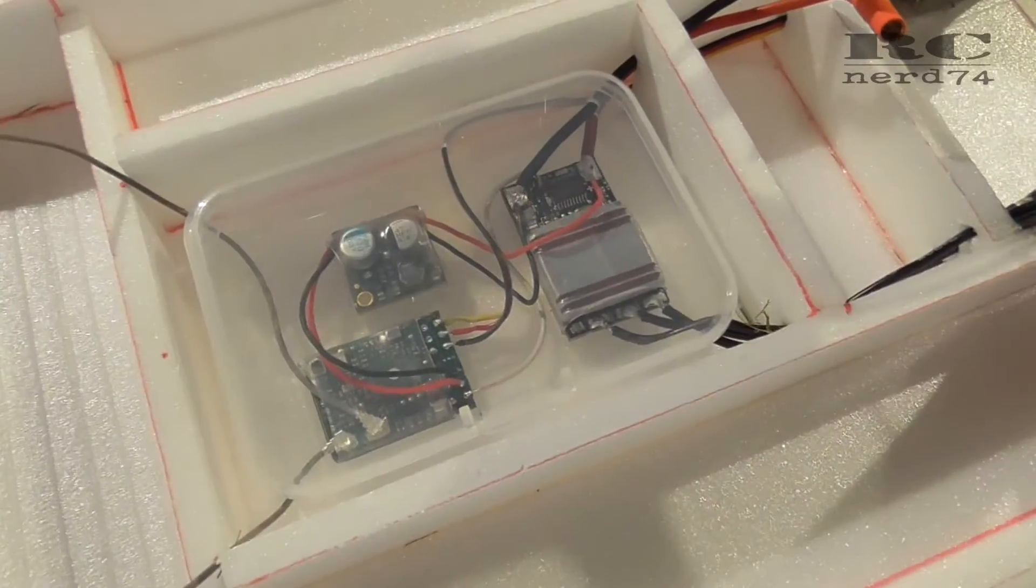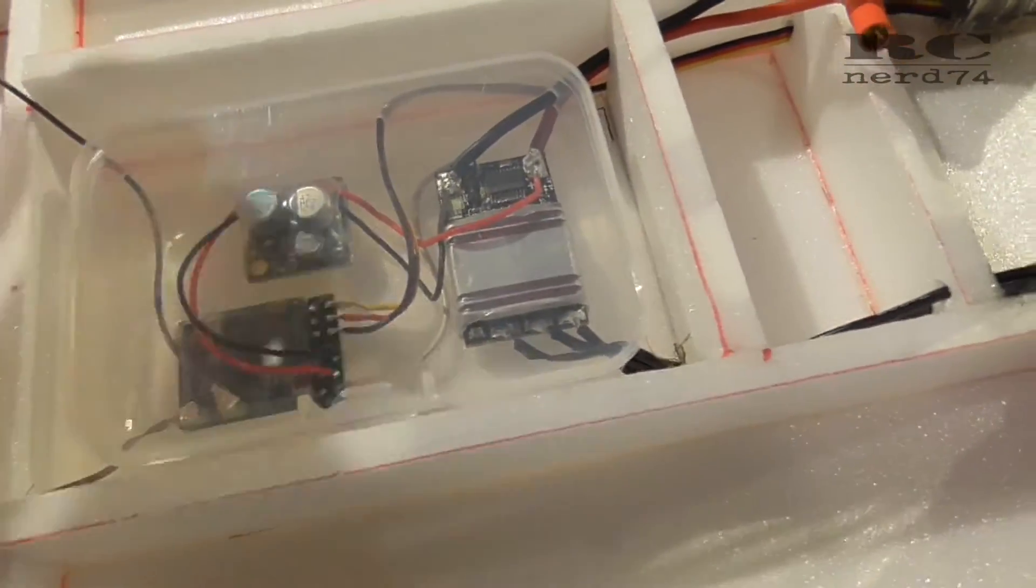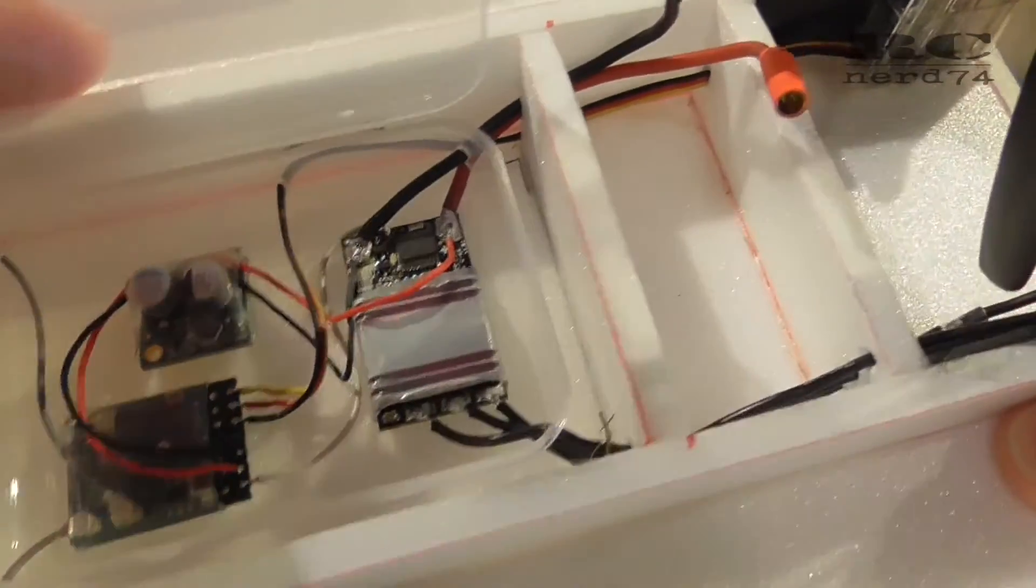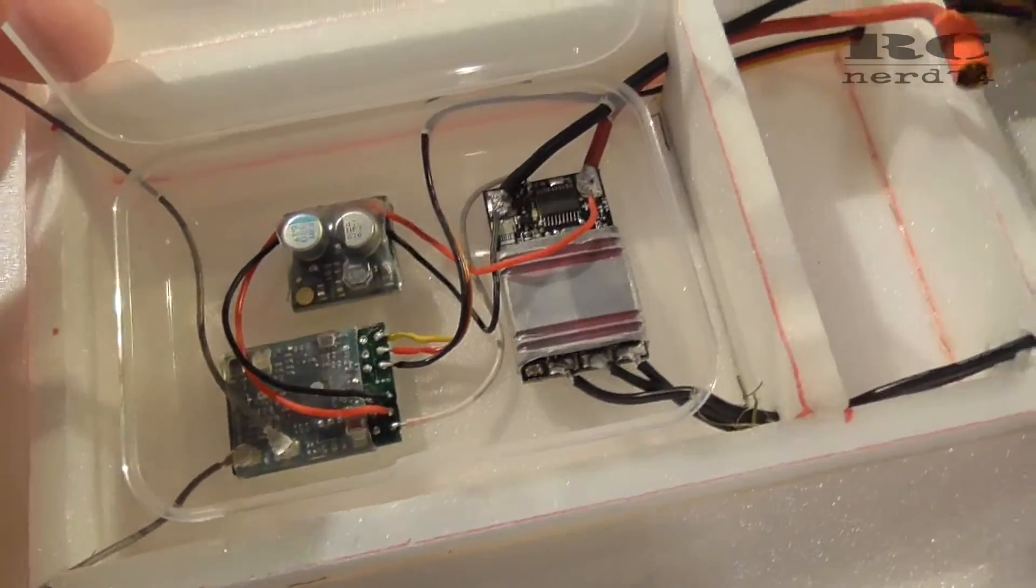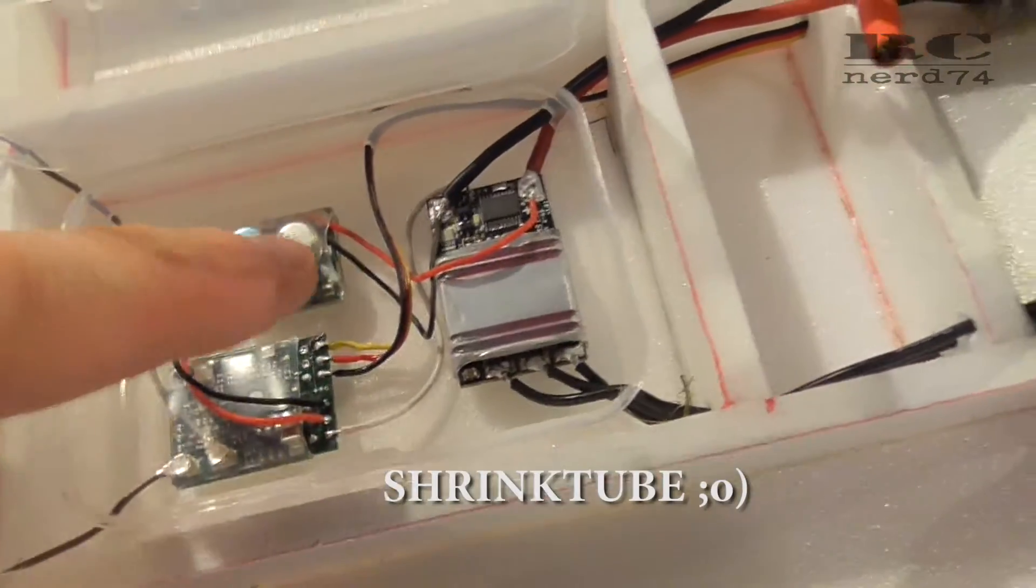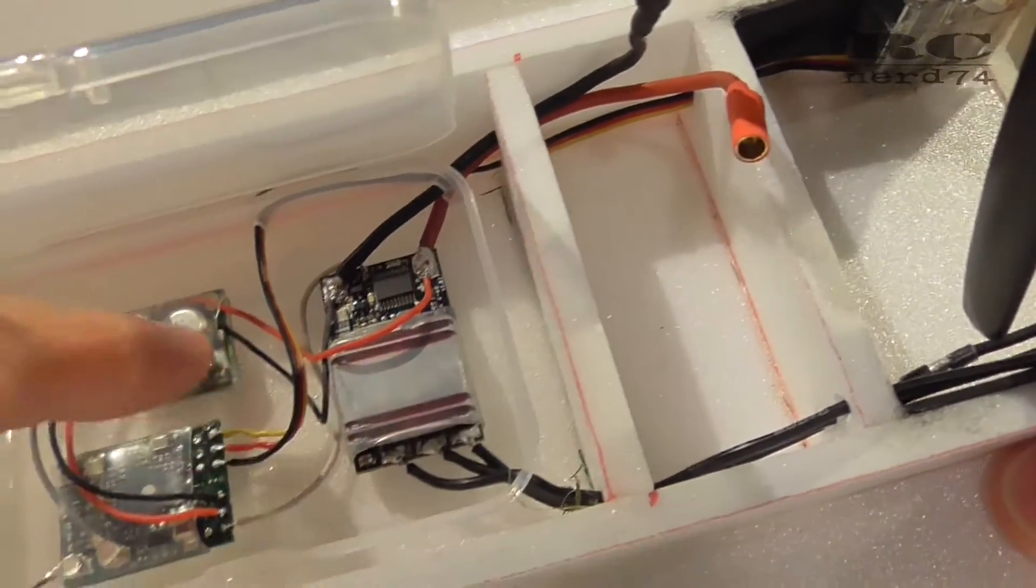Then let's have a look at the electronics. All electronics are now installed into the plastic box. I used all clear shrink tape to shrink all the electronics.